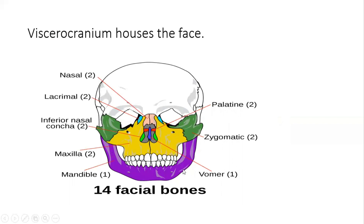The viscerocranium houses the face and the jaw bone, or mandible. There are 14 facial bones: the mandible, maxilla, inferior nasal conchae, vomer, zygomatic bone, palatine bone, lacrimal bone, and the nasal bones. We also have the lacrimal duct, which we'll cover later on.